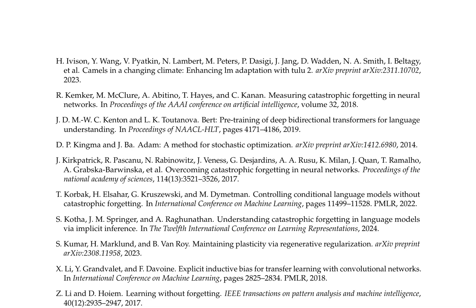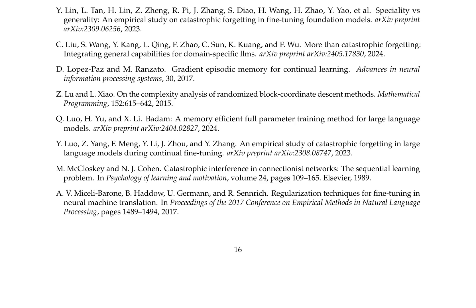The paper addresses the issue of catastrophic forgetting in large language models during fine-tuning, a significant problem in natural language processing where neural networks forget previously learned information after being trained on new data. The authors provide an extensive review of techniques proposed to mitigate this issue, including regularization methods, episodic memory, and multitask learning. They emphasize the importance of understanding the underlying mechanisms causing catastrophic forgetting, highlight the need for comprehensive evaluations and a standardized benchmark, and discuss the trade-off between forgetting and learning, as well as the role of model architecture and optimization algorithms.